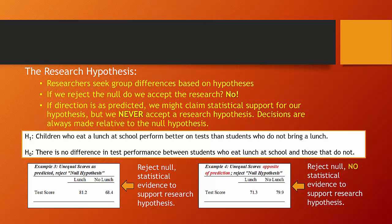Our research hypothesis is what most researchers are trying to find evidence in favour of — most researchers seek group differences. As we take observations and group them into the categories of our independent variable, we look for differences in the values of the dependent variable. If we reject the null hypothesis, is our research hypothesis accepted? No, because we have to confirm that the statistically significant relationship is in fact the one we predicted. As scientists, we never accept our research hypothesis per se — rather, we say there's statistical evidence in support of our hypothesis.